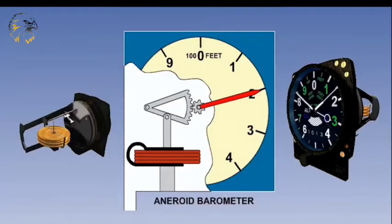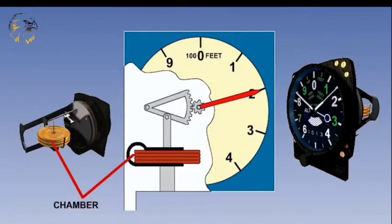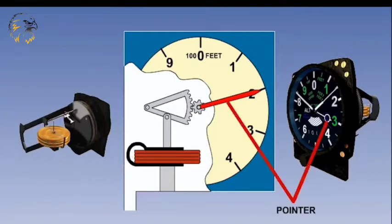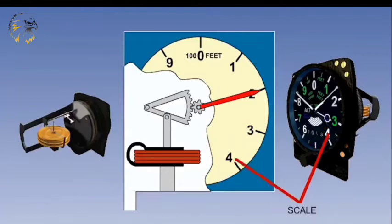It's an aneroid barometer and therefore uses the principle that changing air pressure will cause a small chamber to expand or contract. This chamber is linked to a pointer rotating over a scale graduated in feet or meters.